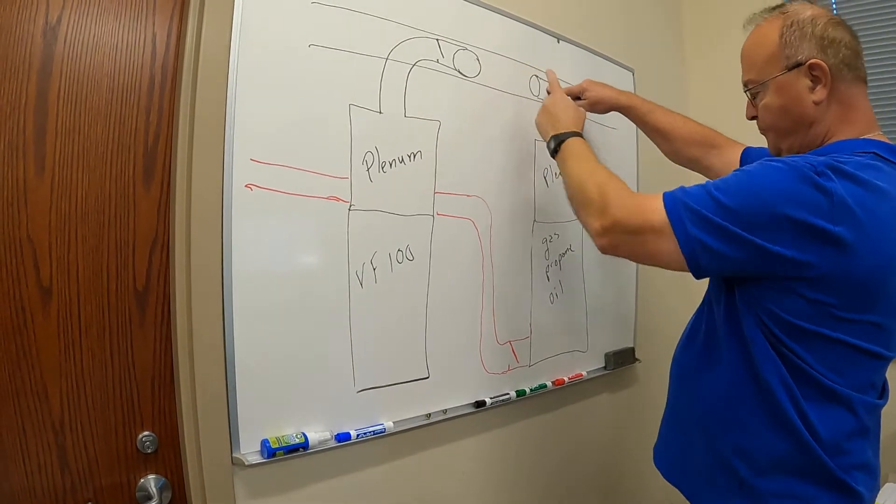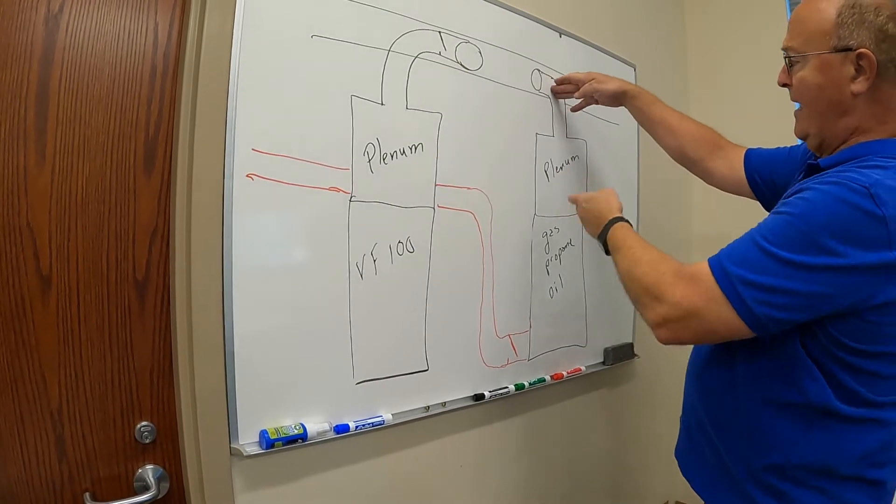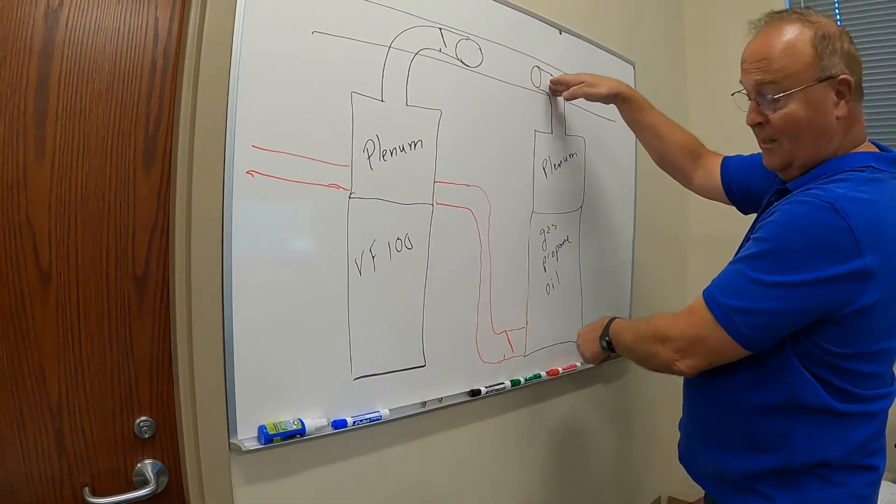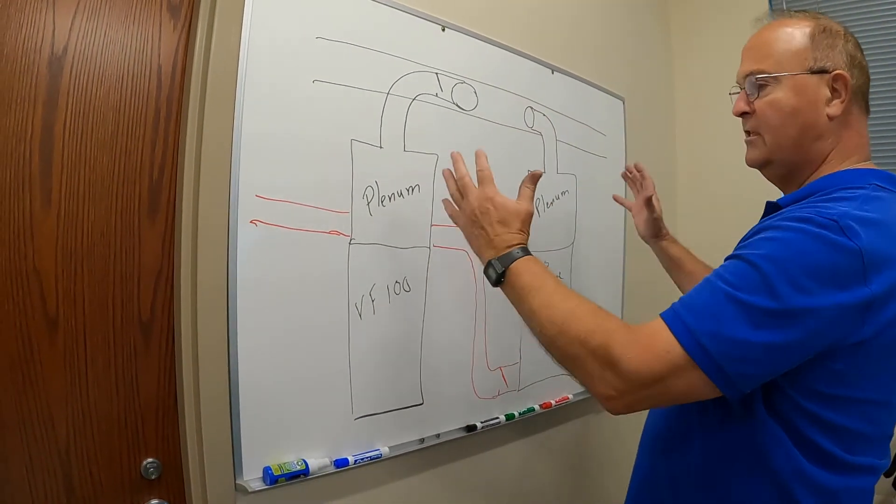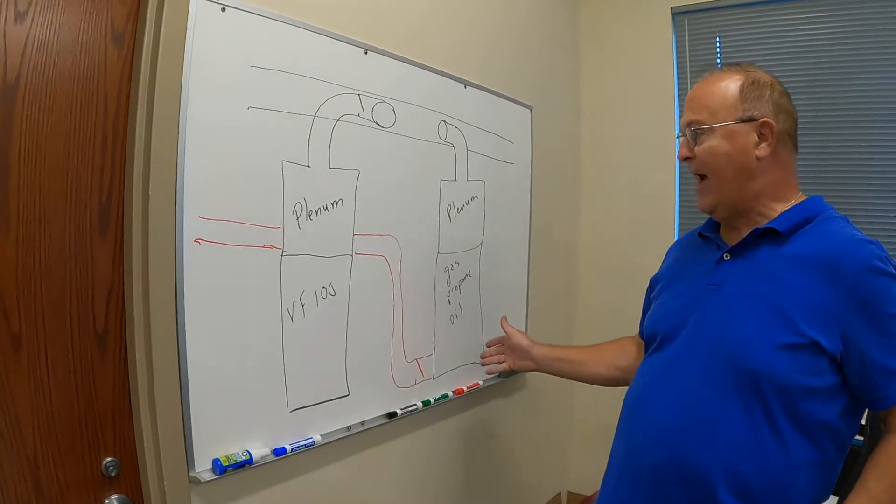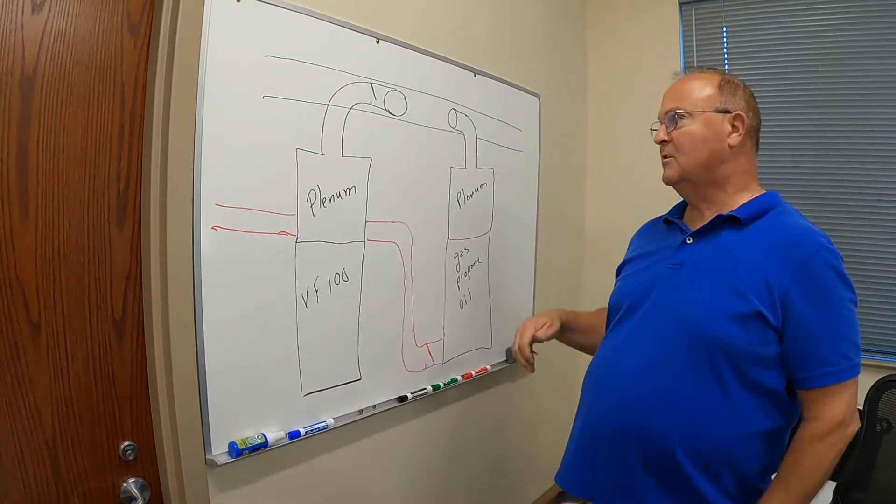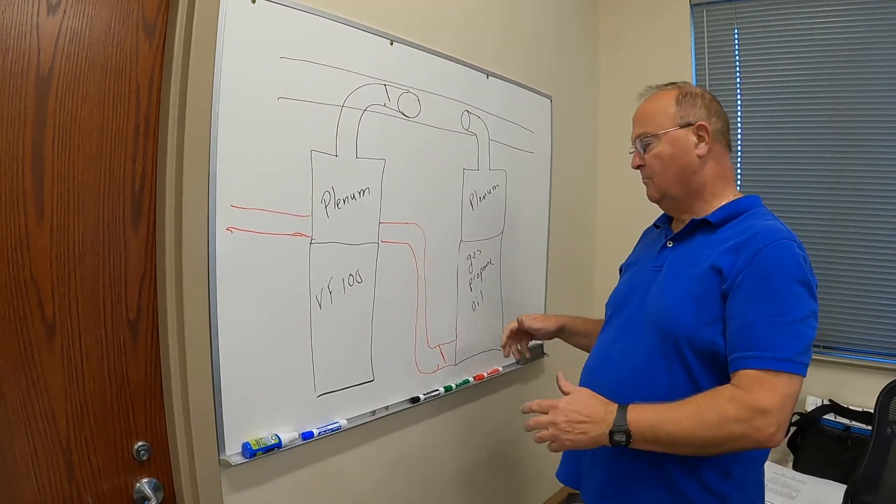But now if you have a backdraft flap on the cold air return, it can't push air back down here because that flap's going to lock shut and it won't let you push hot air back down through there. So that's the two setups for setting up your backdraft flaps. You can put them in the cold air returns, probably best in the warm air section of the furnace, but either way works fine.